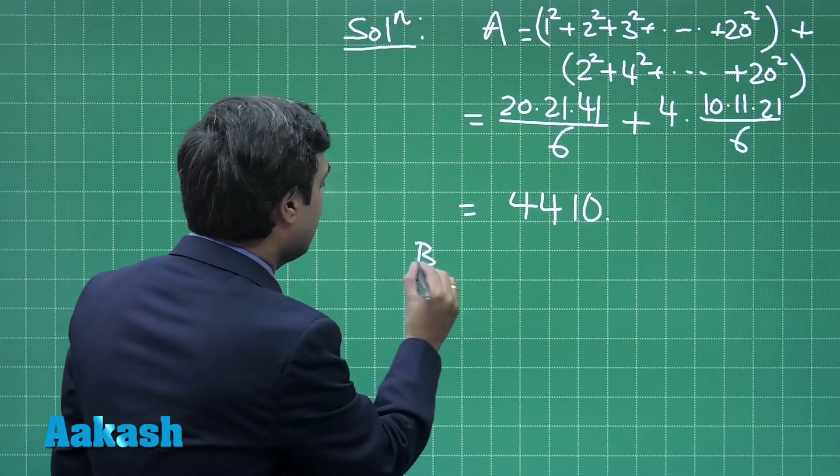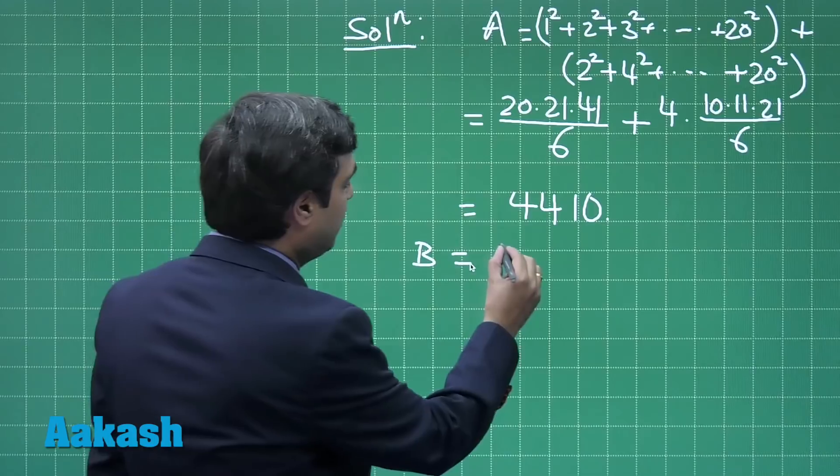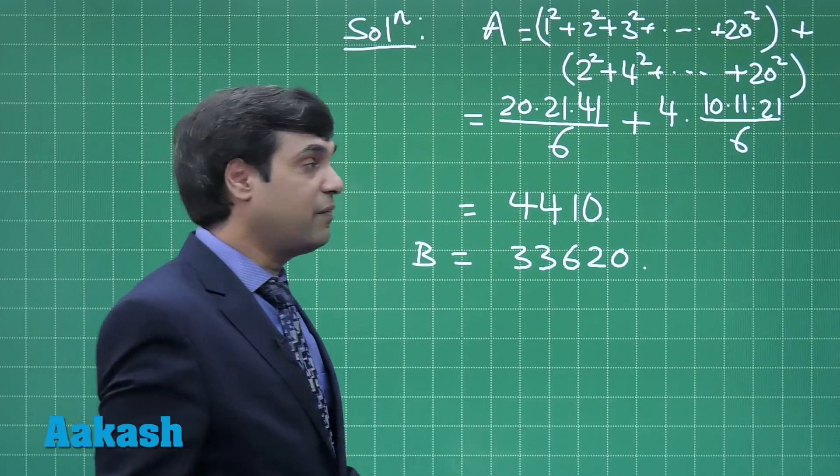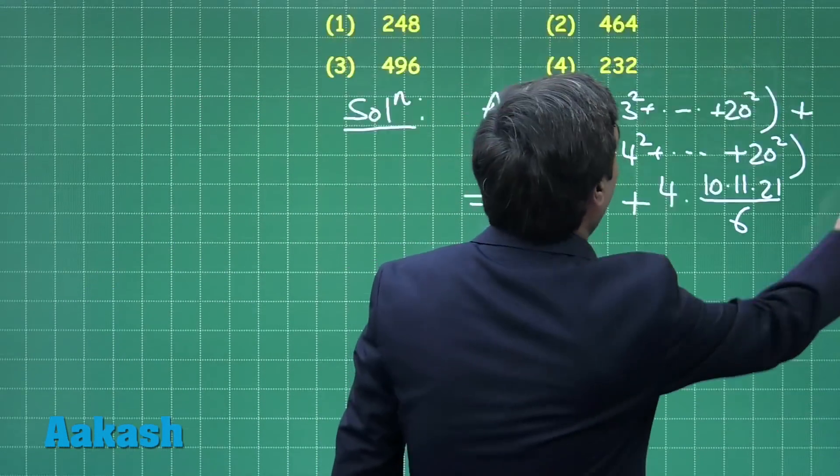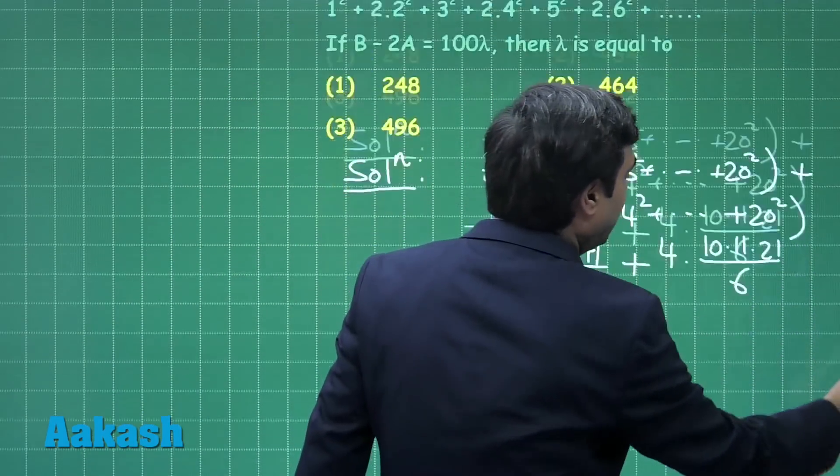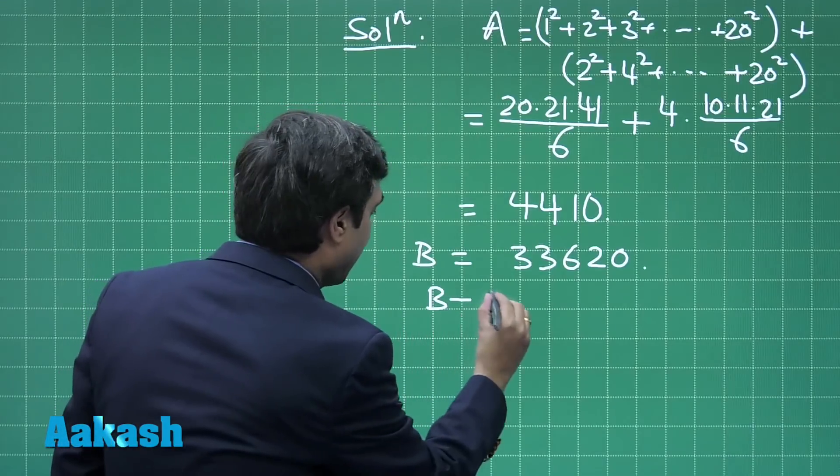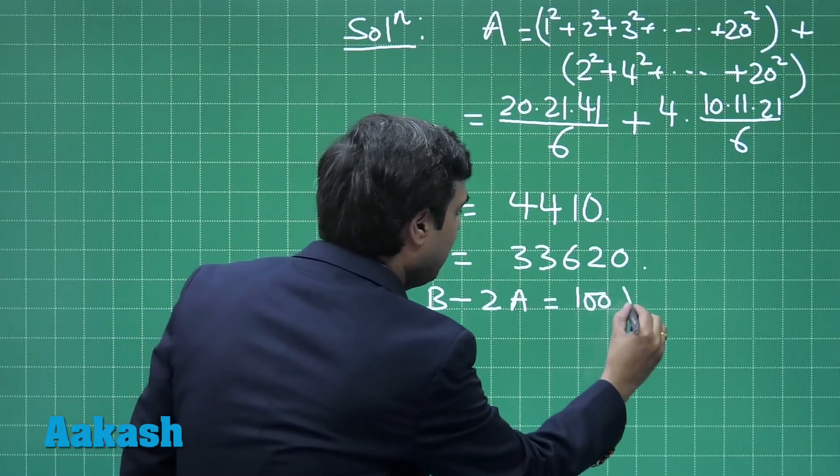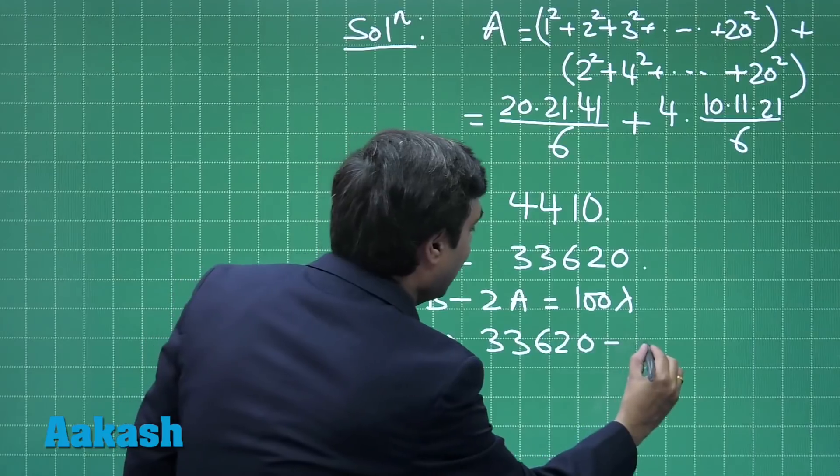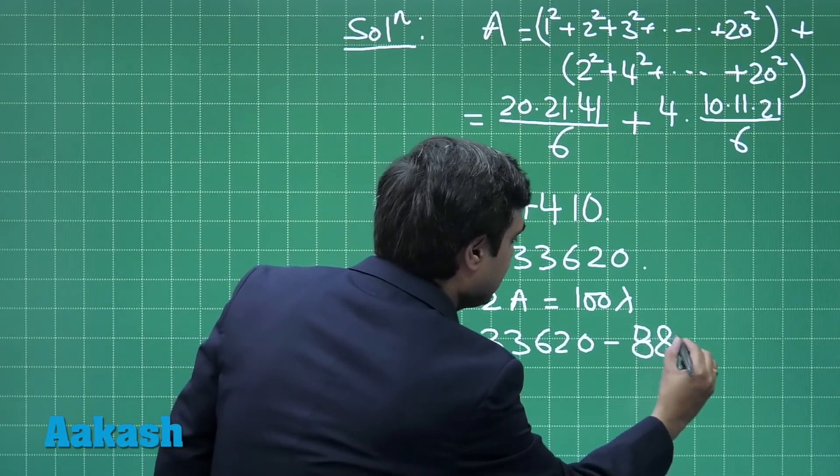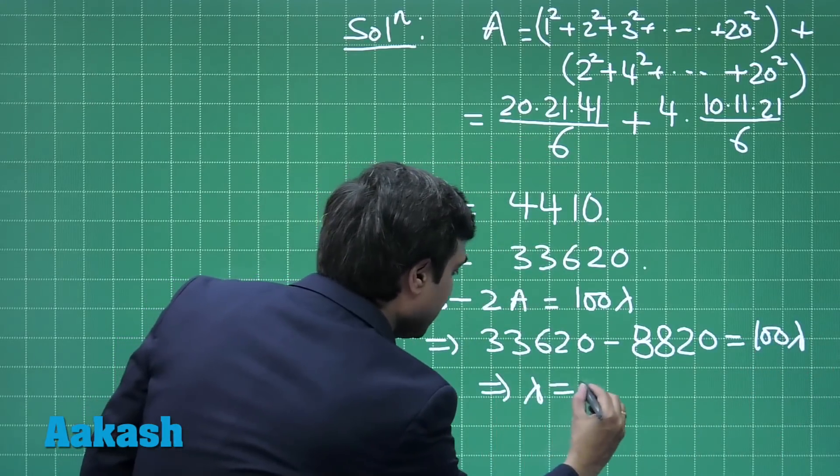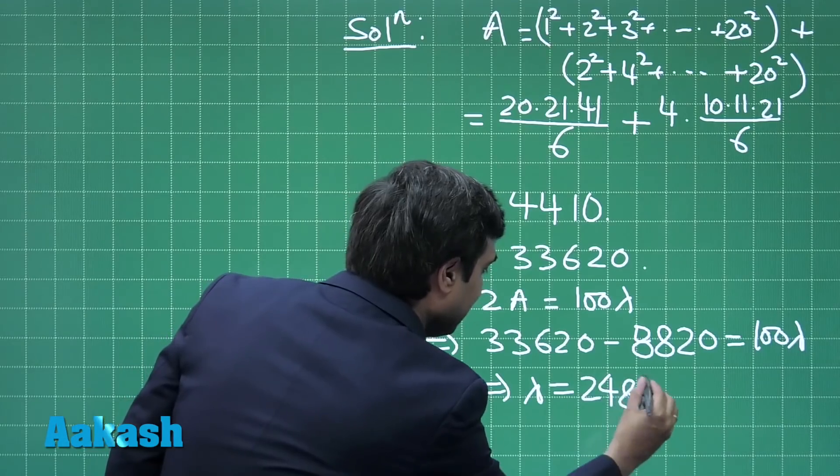Similarly, we can find B where it is for first 40 terms; same formula that will give you 33620. In the question it is given as B - 2A = 100λ. Substitute this B and A: we get 33620 - 8820 = 100λ, meaning that λ simply comes as 248.